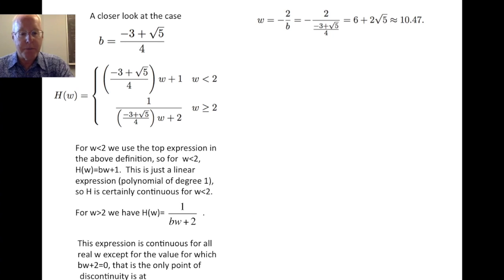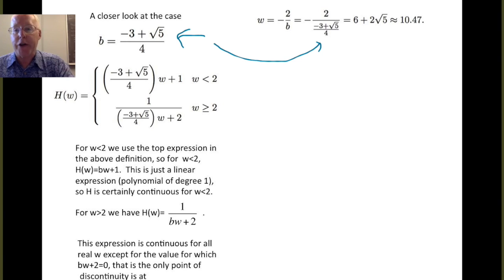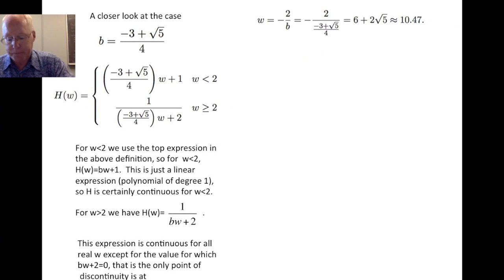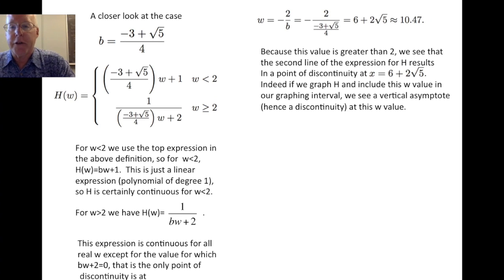So if we set bw plus 2 equal to 0, we find that w equals minus 2 over b. And remember, in this case, the b has the value of minus 3 plus root 5 over 4. Let's put it in for b here. And a little algebra and rationalizing the denominator gives us a value of w equals 6 plus 2 root 5, which is about 10.47. Now, we want to notice that value was bigger than 2. So it is a value of w that could arise in that lower line. So, because of this, we see the second line for the expression for h results in a point of discontinuity at w equals 6 plus 2 root 5.